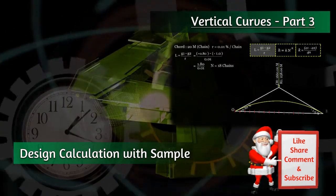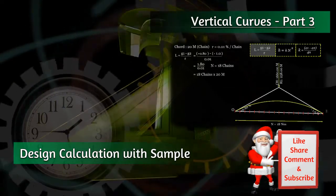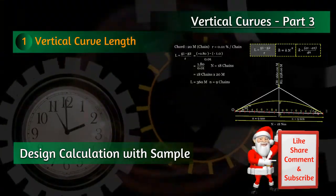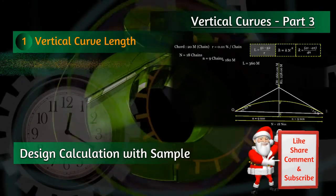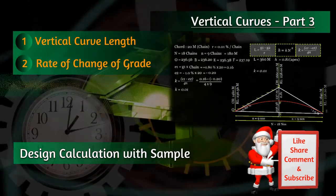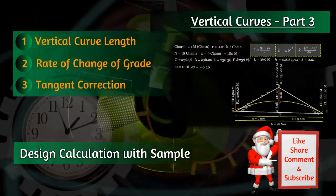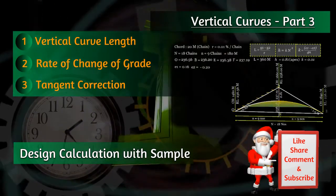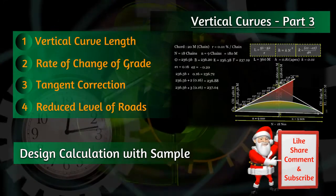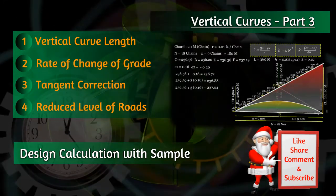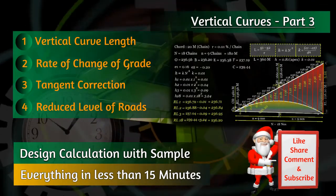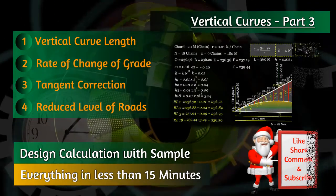Here we will see in detail about the calculations of the curve length, the constant value of rate of change of grade K, the tangent correction H, and finally the calculation of final reduced levels of finished road surface. We will study all of this in less than 15 minutes time, so please watch till the end.